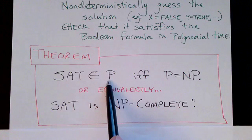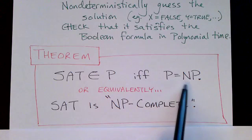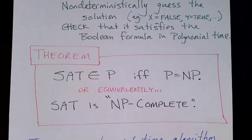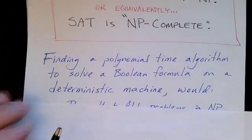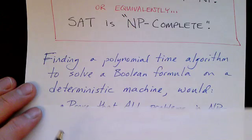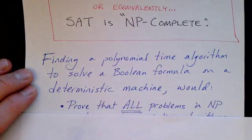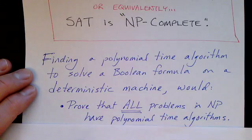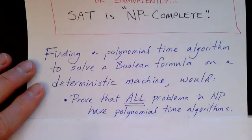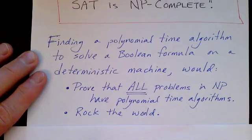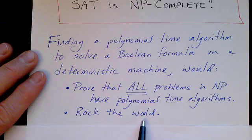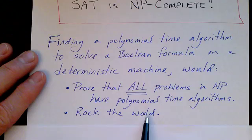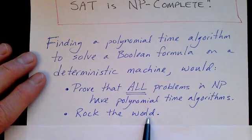So if we can find a polynomial time solution for SAT, then we have proven that P equals NP. And that's the theorem. Finding a polynomial time algorithm to solve a Boolean formula on a deterministic Turing machine would prove that all programs in NP have polynomial time algorithms. And of course, this would prove that P equals NP and that lots of problems that can't be solved in less than exponential time actually do have polynomial time solutions. And this would rock the world and make you instantly famous.